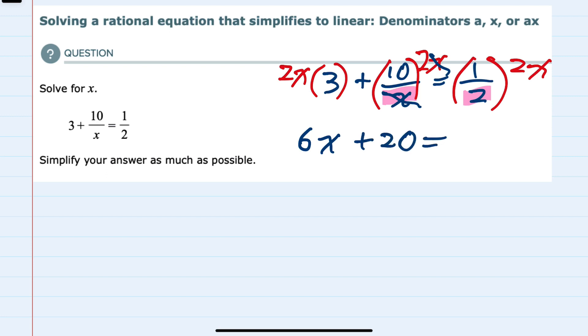And on the right-hand side of the equation, here the 2's cancel. So I'm left with just X times 1, or X. So now we have an equation that is much easier to solve because we no longer have any fractions. And we accomplish this by multiplying by the lowest common denominator.